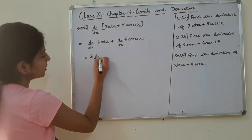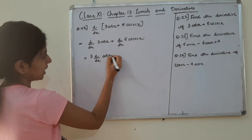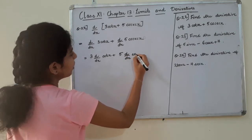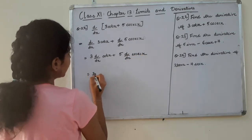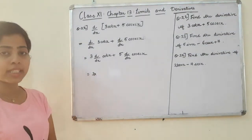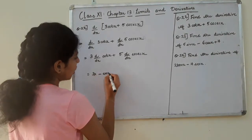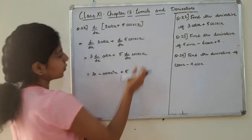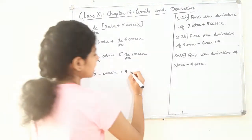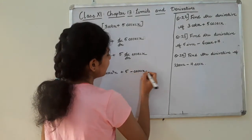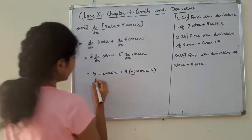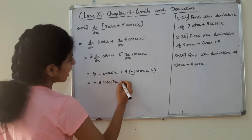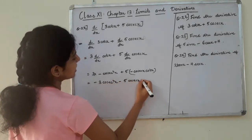We have 3 into d/dx of cot x plus 5 into d/dx of cosec x. The derivative of cot x is minus cosec squared x, and the derivative of cosec x is minus cosec x cot x. So we get minus 3 cosec squared x minus 5 cosec x cot x.